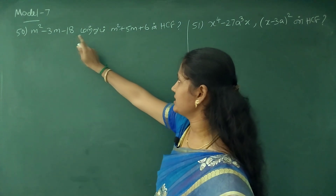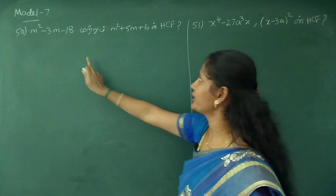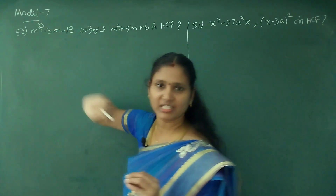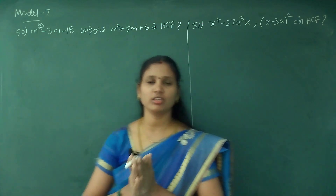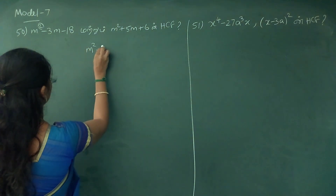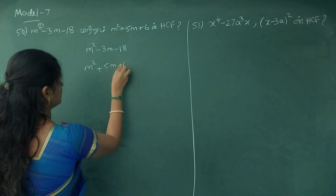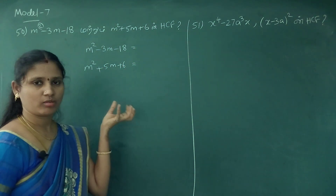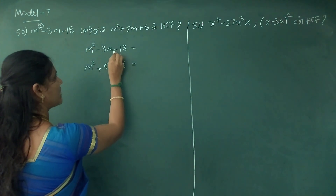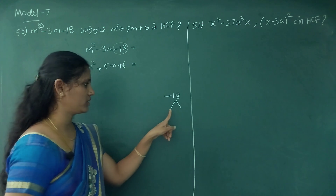M squared minus 3m minus 18 and M squared plus 5m plus 6 — find the HCF. This is a quadratic equation — the power of the variable is 2. Now there are two equations: M squared minus 3m minus 18, and M squared plus 5m plus 6. We have to use the factorization method. The constant value must be considered.